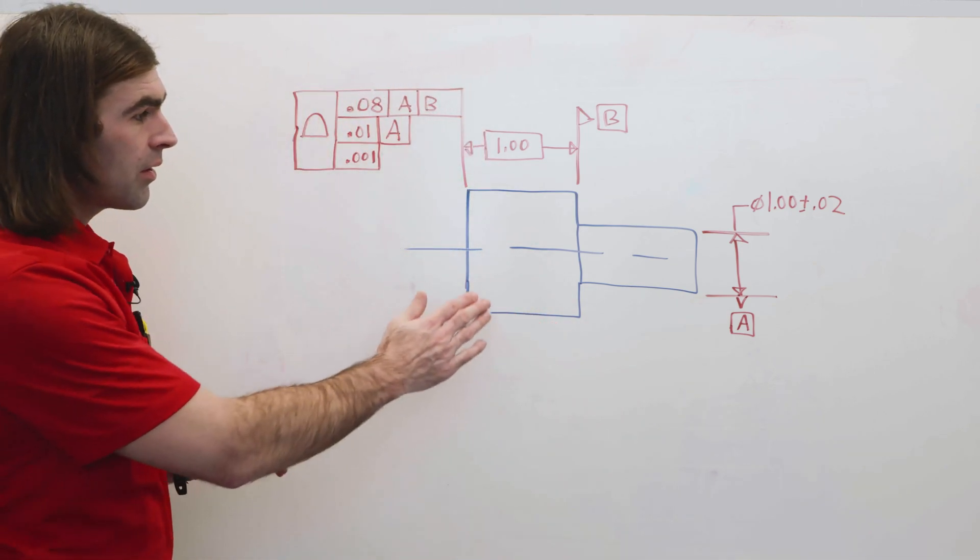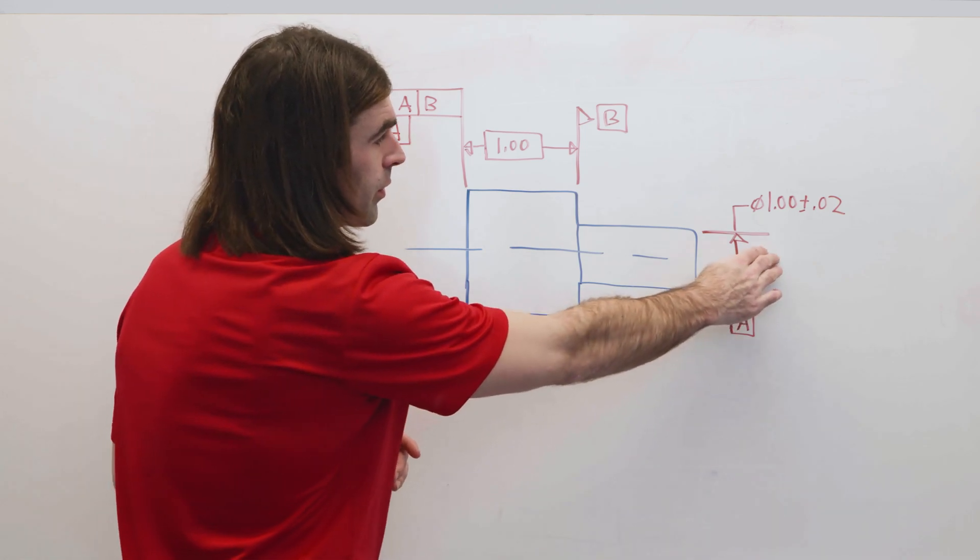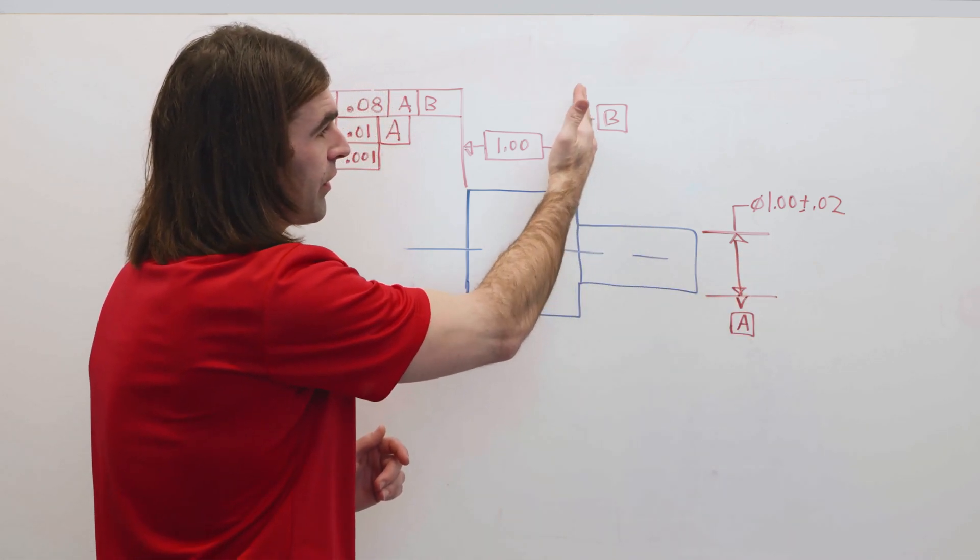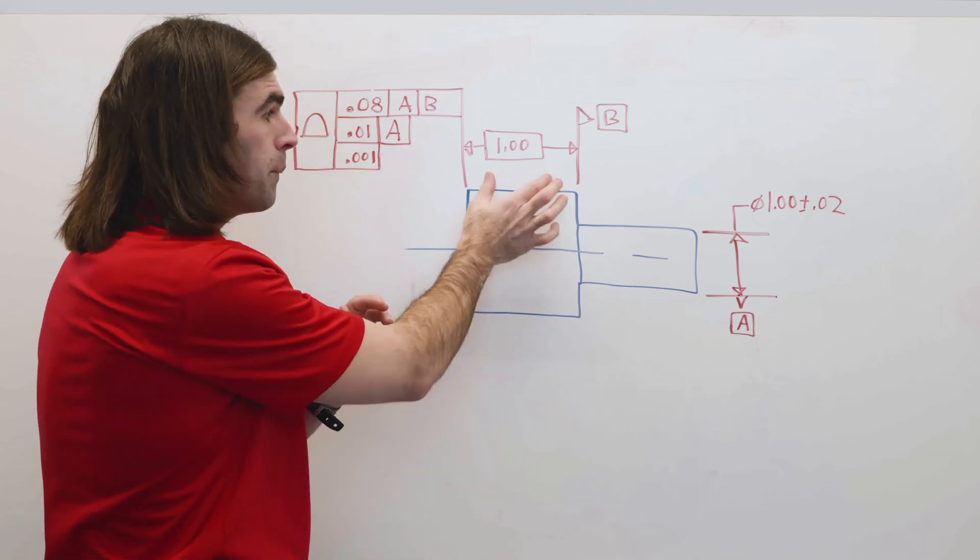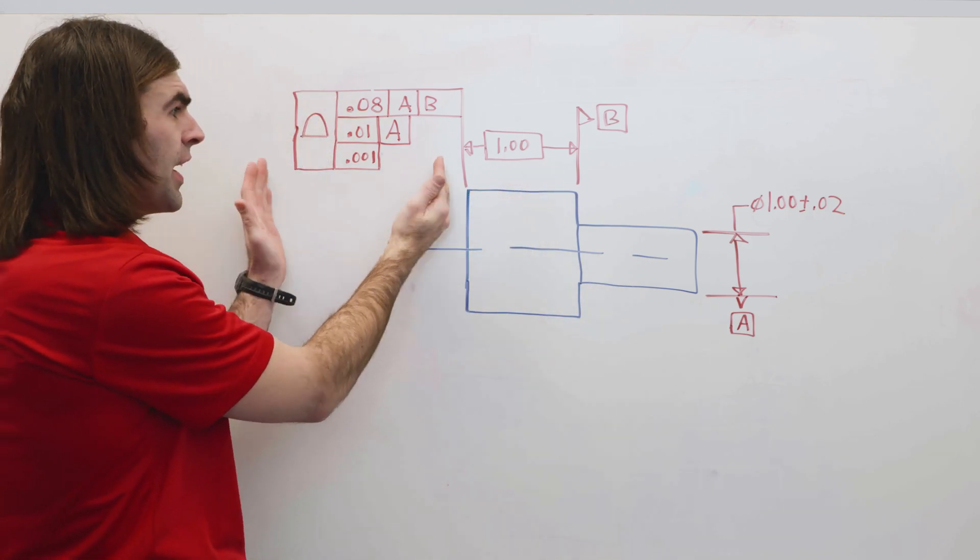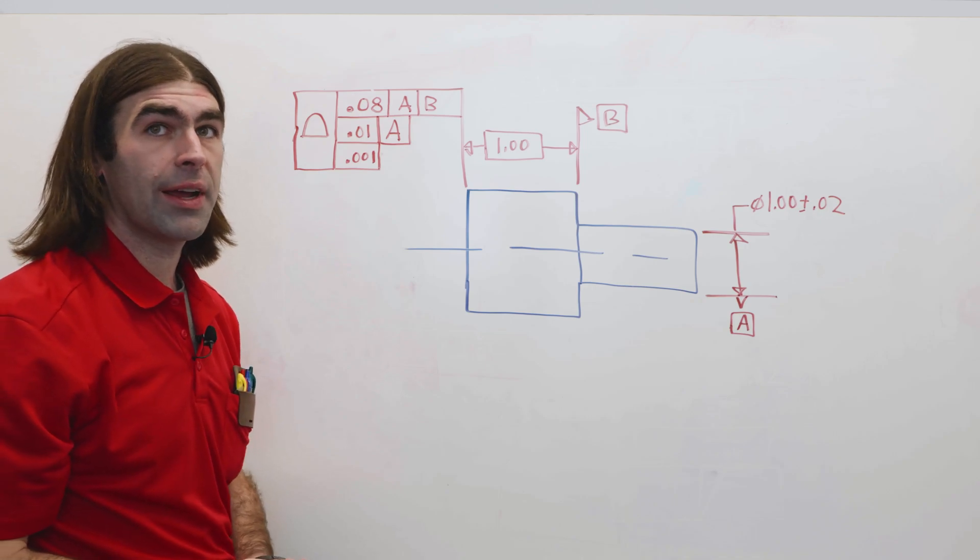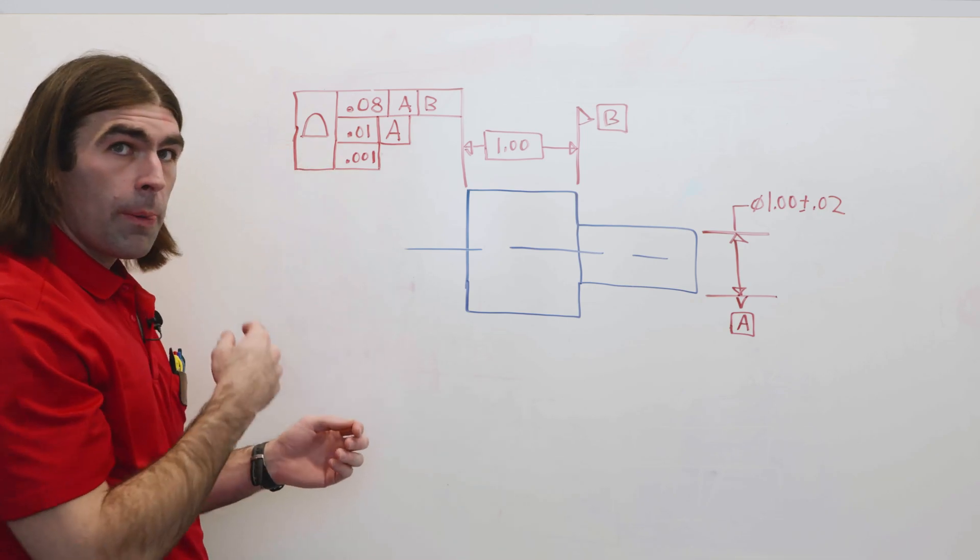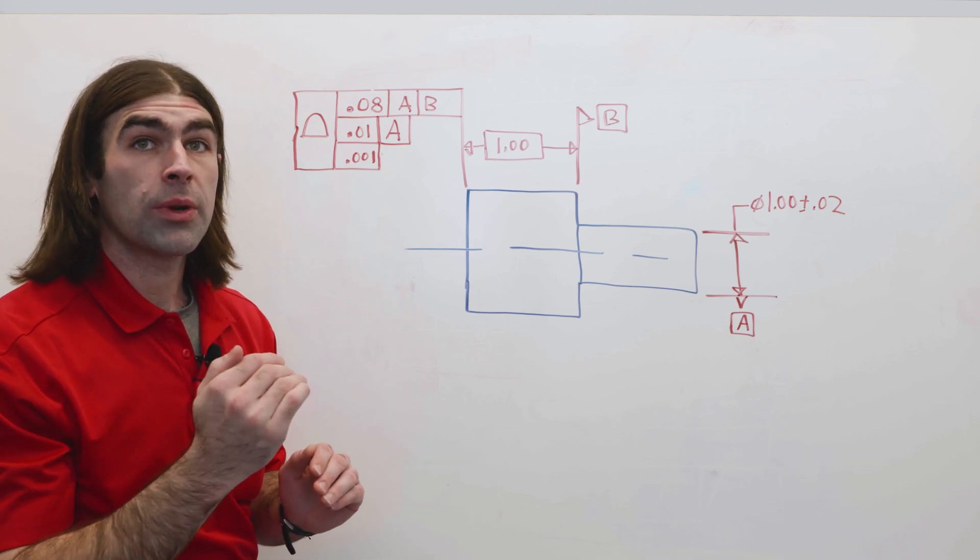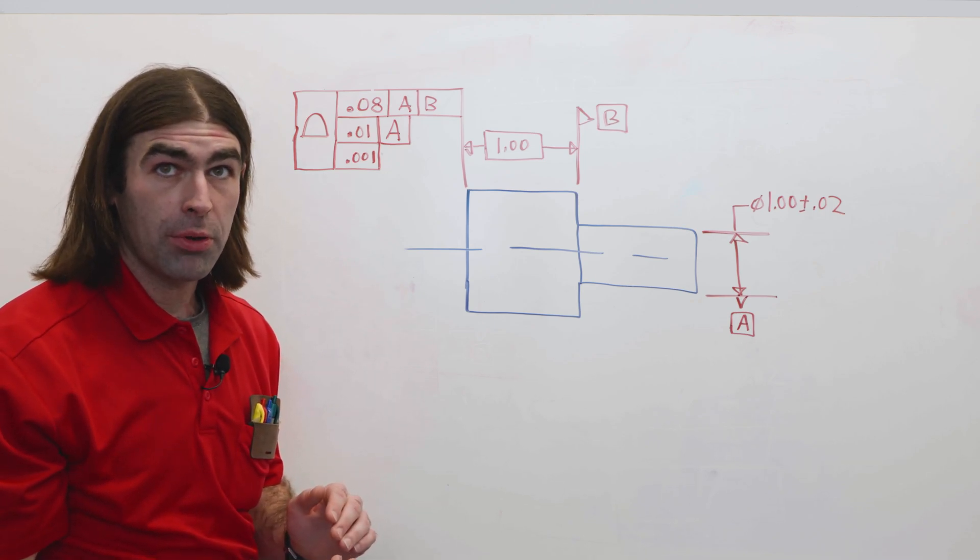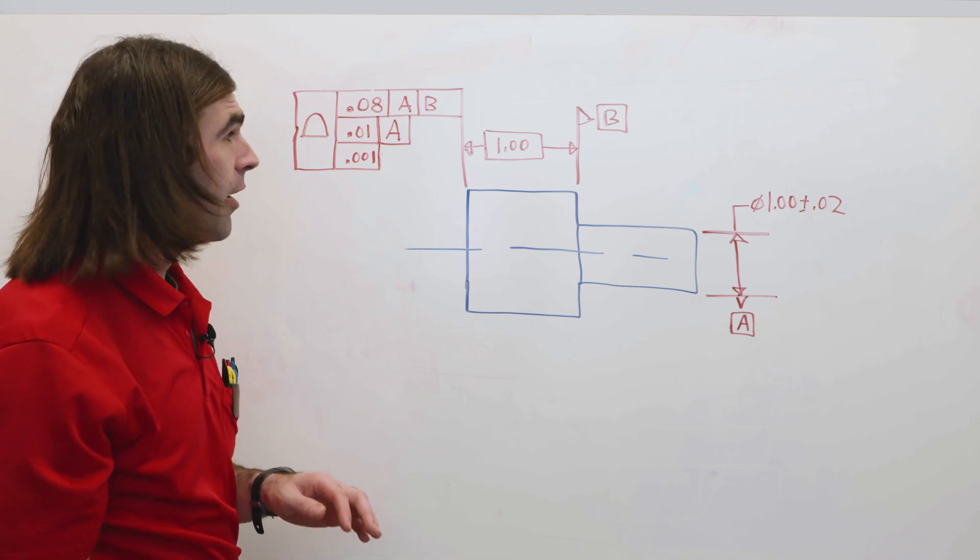So I've got two diameters here. This one is marked as datum A. We've got a datum here. Datum B is the flat surface, basic dimension, and now this giant feature control frame. So the single symbol means it's a composite profile. In this situation, it could be three separate profile symbols, but we'll use composite for now.